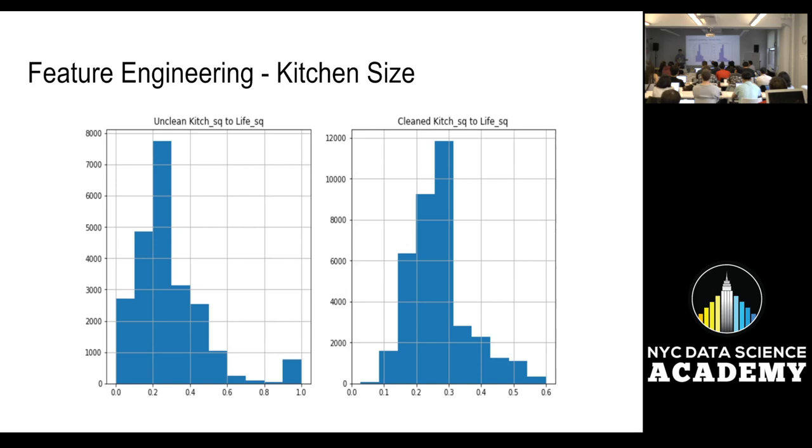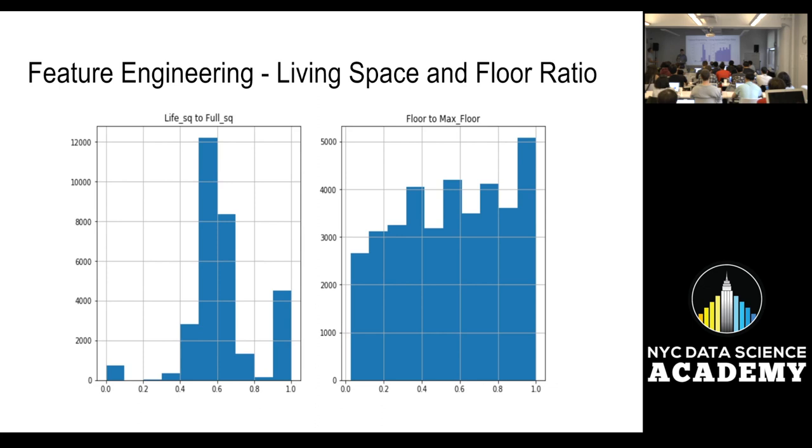Future engineering looked at kitchen size compared to life. This is the unclean data. There's a lot. Again, these are one. It said that the kitchen size was the size of the entire house. It didn't make any sense. So I and they then put it as, or imputed as the median, which was like about 0.3 or so. This is the unadjusted. That's the clean version.